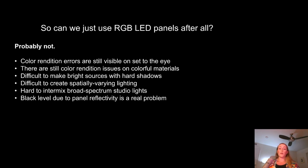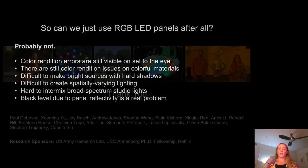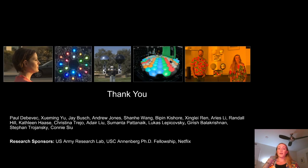We've seen that we can ameliorate some of the color rendition challenges that come with using RGB LEDs, but can we just use RGB LED panels after all? The answer is probably not. There are still color rendition errors visible on set to the eye, still color rendition errors in camera for certain colored materials with specific reflectance spectra. It's also challenging to make bright light sources with hard shadows, difficult to make spatially varying lighting, cinematographers often need to intermix virtual production with broad spectrum studio lighting, and the black level challenges due to panel reflectivity are a real problem. I want to thank all our collaborators over the years, and I hope we've all left today with an appreciation of the spectrum of lighting we're going to be using to illuminate actors inside virtual production stages.